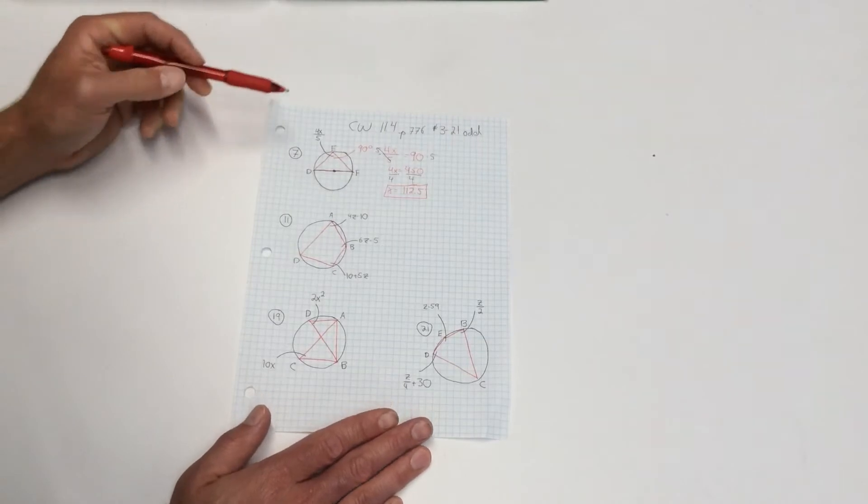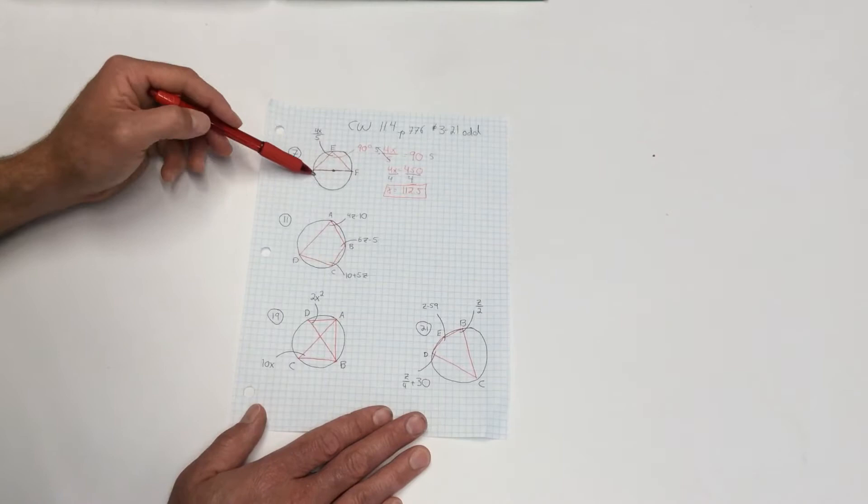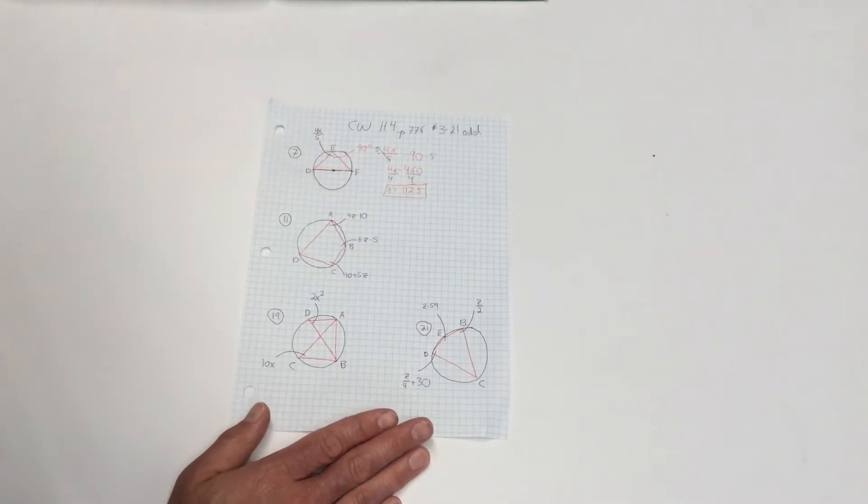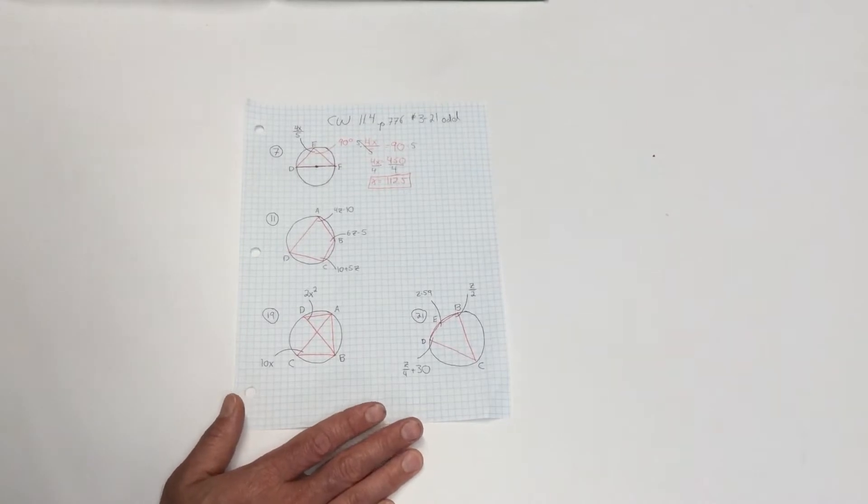And again, I knew that because I could deduce that whenever you see it going through the middle, that's that semicircle. This is 180, so the inscribed angle E must be equal to 90. And then it's just algebra from there on out.